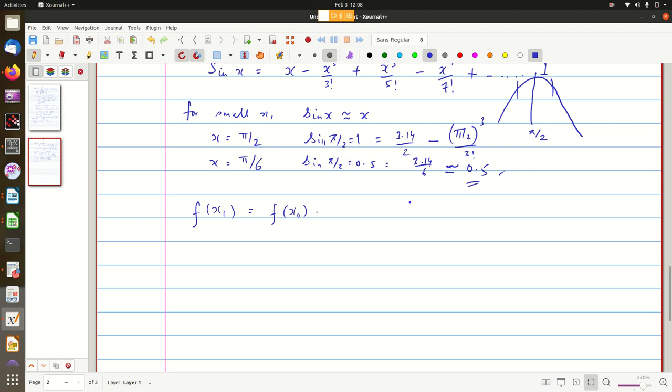I get x0 plus f dash of x0 into, you are substituting the value of x as x1. So x1 minus x0 plus f double dash of x0 by 1 by 2 factorial into wherever x is there you are substituting x0. So plus x etc.